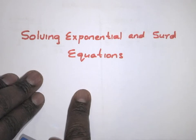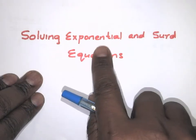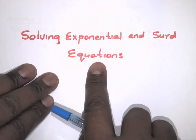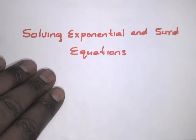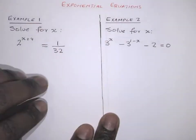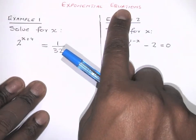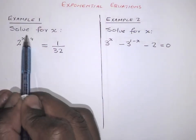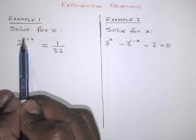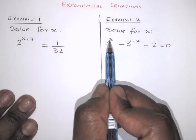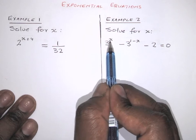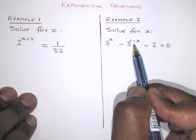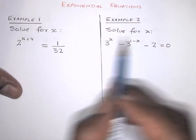Hi, Grade 11. Today we'll be looking at exponential and surd equations and how some of these are solved. An exponential equation will have a variable only as an exponent — like x at the top — so that would be an exponential equation.